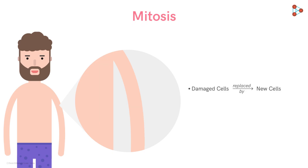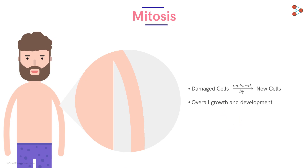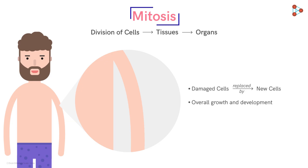And not only repair, but the process of mitosis helps in the overall growth and development of the organism. Due to mitosis, cells make identical copies of themselves, giving rise to growth of tissues and finally the organs. So the increase in size and complexity of higher organisms is possible due to the process of mitosis.